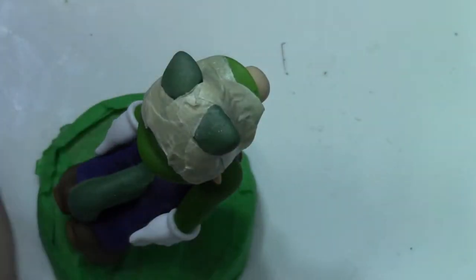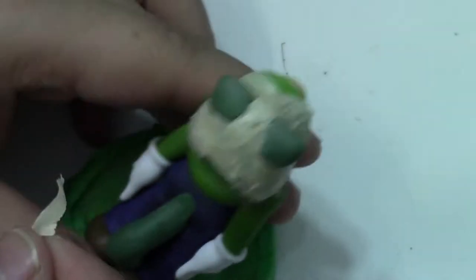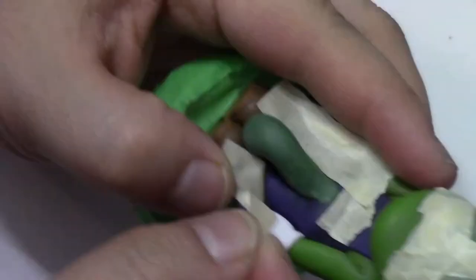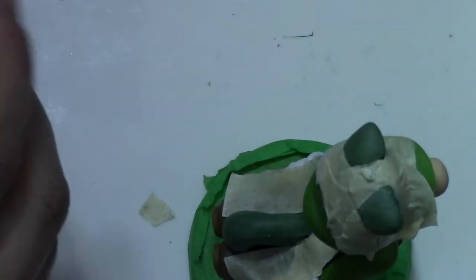Before we do that though, I want to mention that I did give this model a spray with some spray lacquer from Testers. You might also find it labeled as dull coat, just so that the paint has something to adhere to on the green sculpting putty that we use.